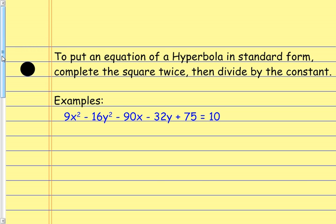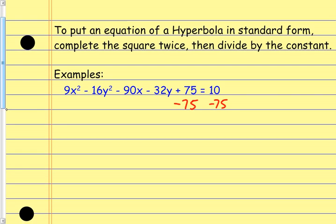Looking at this first example, to go through the process of completing the square, the first thing we do is create space by getting rid of the constant term. So I'm going to move this 75 by subtracting it from each side. Then I reorganize: I've got 9x² − 90x with a little space, minus 16y² − 32y with a little space, equals negative 65.